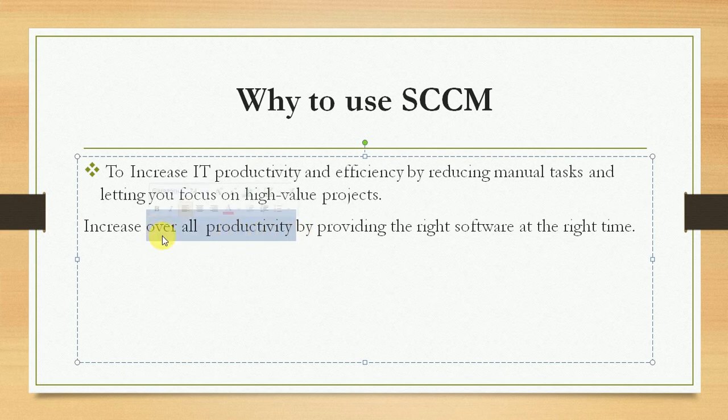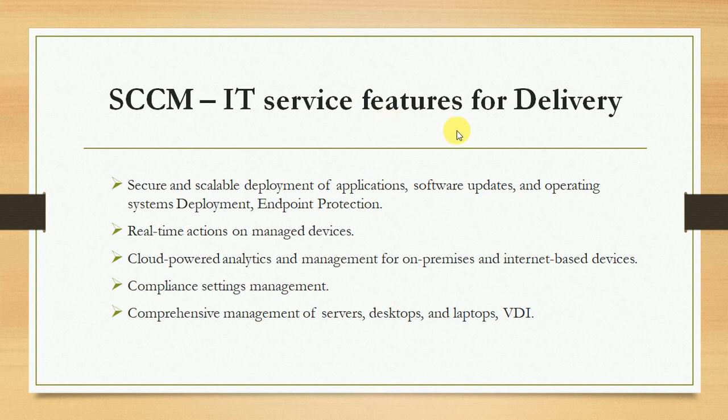Productivity is the main concern in IT. SSCM increases productivity by providing the right software at the right time. If we deploy manually, it takes much more time and there is a risk of human error — whether the right software was installed or not. A very small number of people can use SSCM to deliver a high amount of work, making the application available on user systems whenever needed.